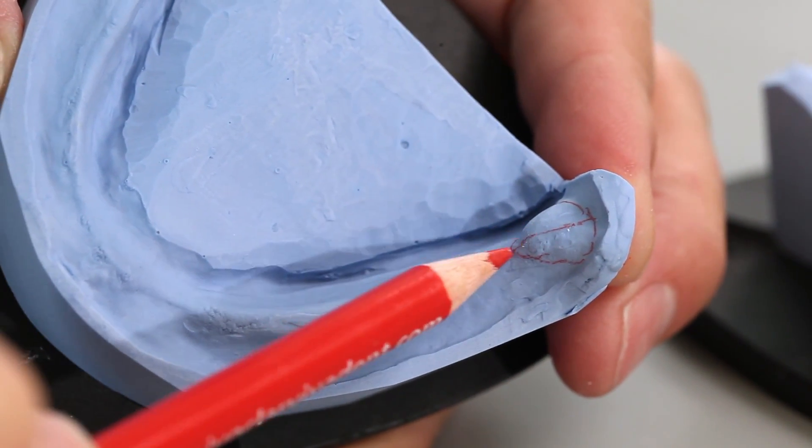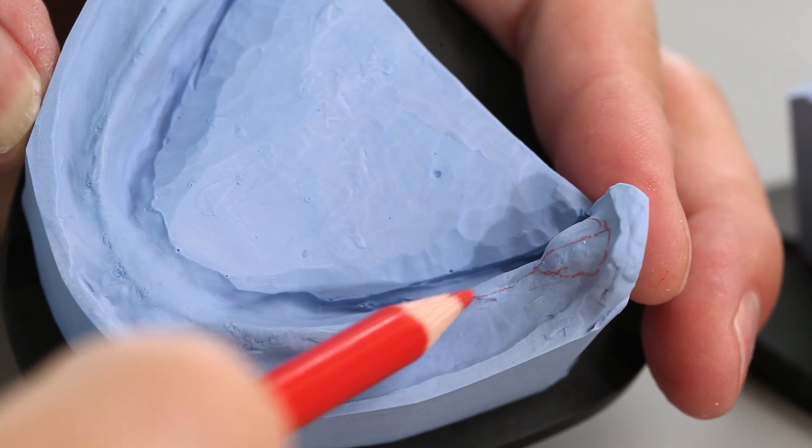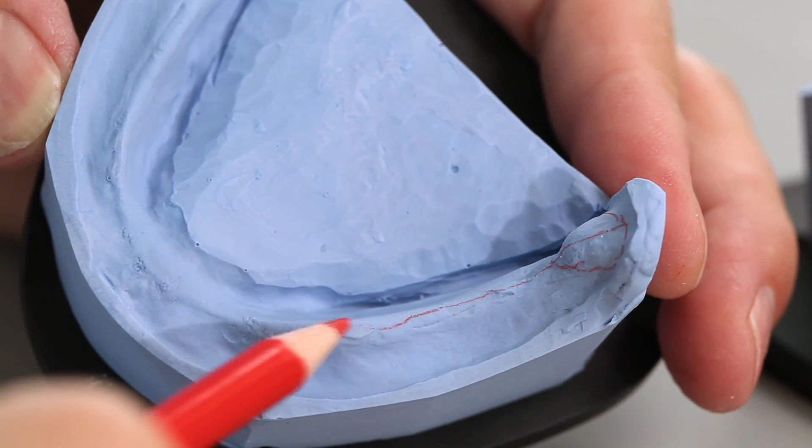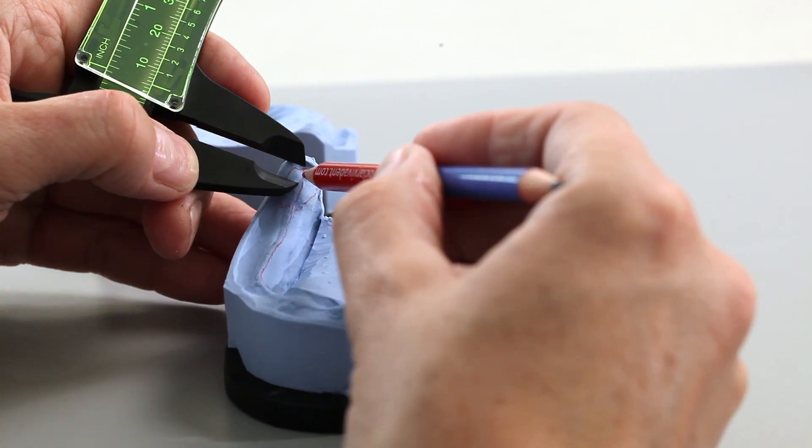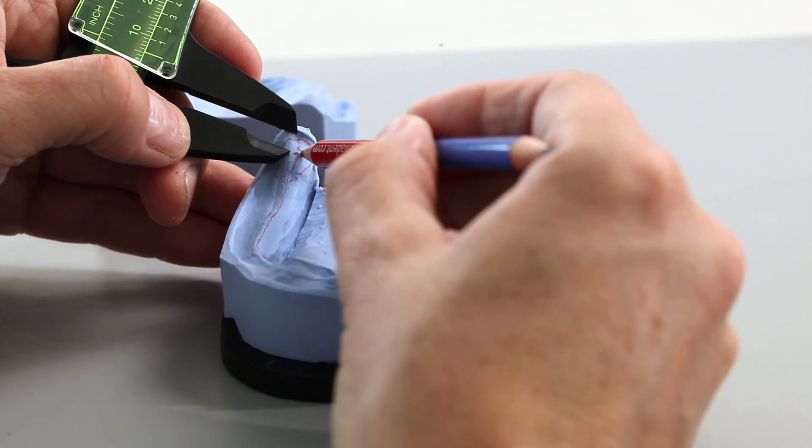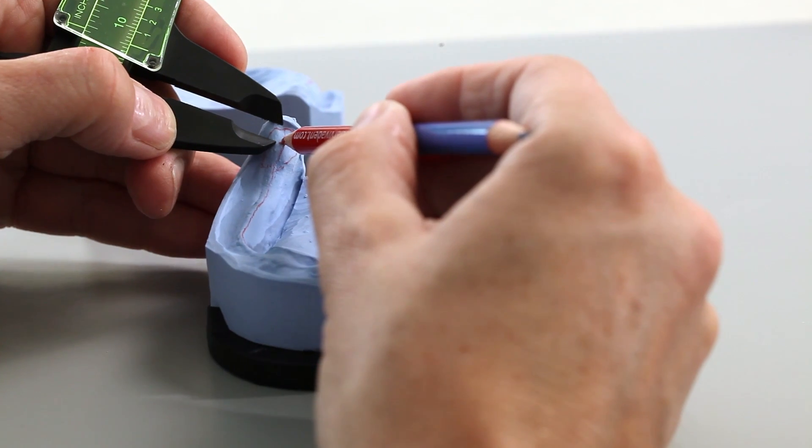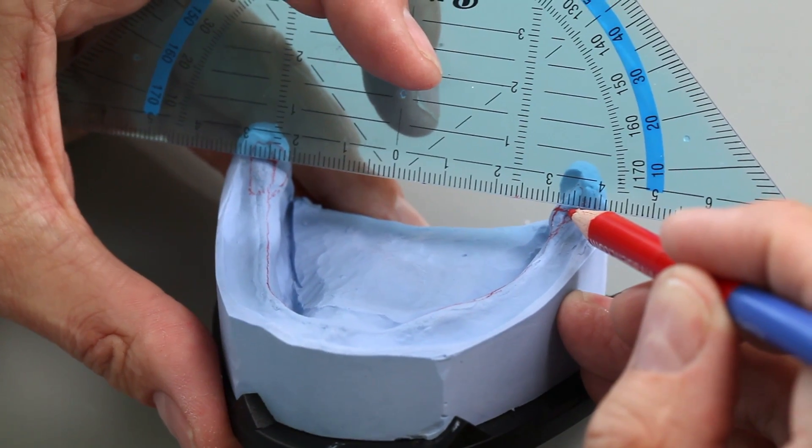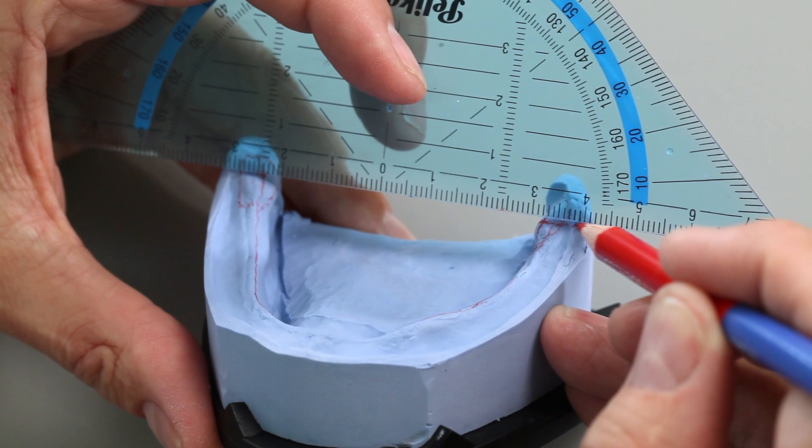In the lower jaw, mark the retromolar pad and the path of the alveolar ridge. Mark the occlusal plane in the area approximately 5mm below the dorsal end of the retromolar pad. Transfer it to the model edge.